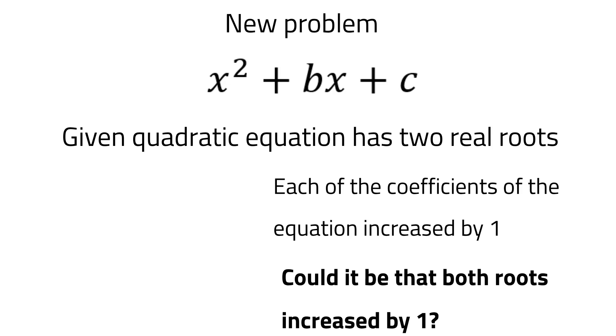We have the following quadratic equation. B and C are some numbers. We also know that this equation has two real roots. Now consider that each coefficient increased by one. Could it be, for instance, for a specific combination of coefficients, that both roots also increased by one?